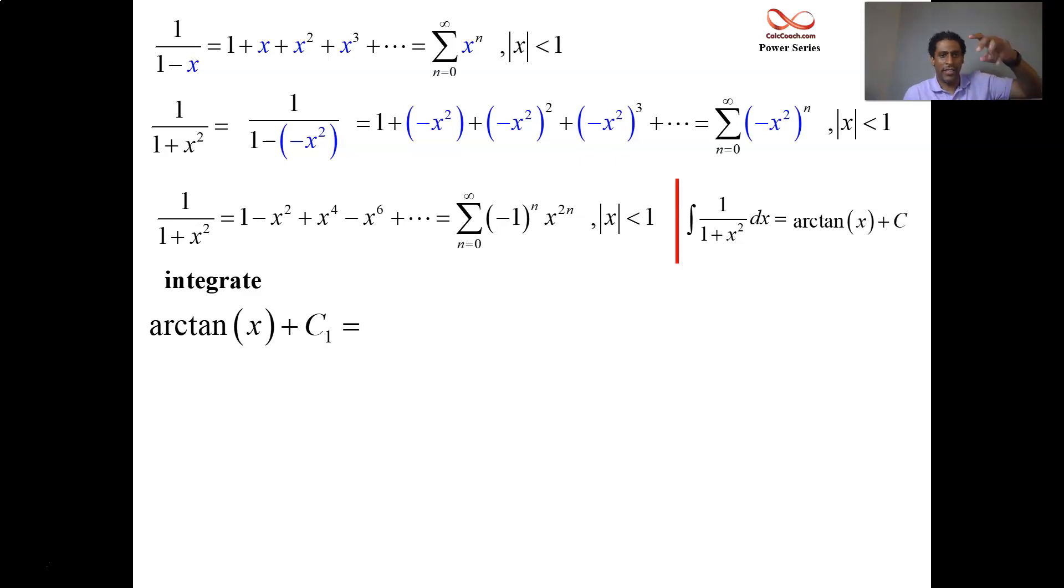If we integrate the individual terms, we'll get x minus x cubed over 3 plus x fifth over 5 minus x seventh over 7. We'll get the odd powers divided by the exact matching odd number, alternating in sign, starting with a plus. And each one of them has a plus c on it, so we can just combine them all together.